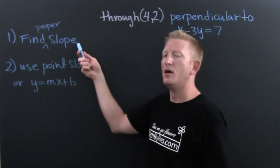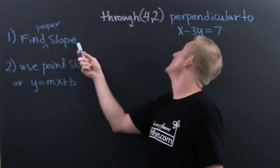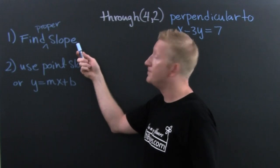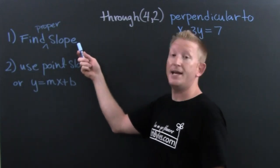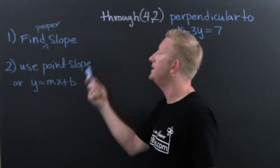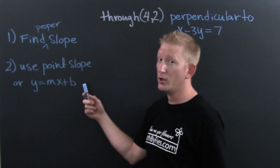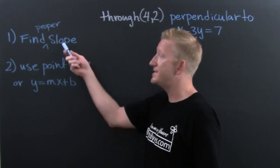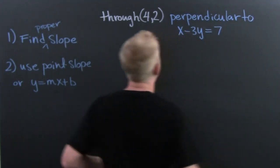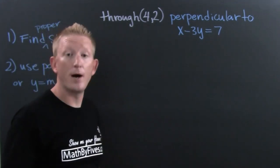First, we're going to find the proper slope. If we're looking for parallel, we find the slope and use that same slope. If we're looking for perpendicular, we find the slope and then take the negative reciprocal of that slope. Then we'll use point-slope or y equals mx plus b. It's really not that hard — it's that same old two-step. What do we first need to do? We need to find the proper slope.